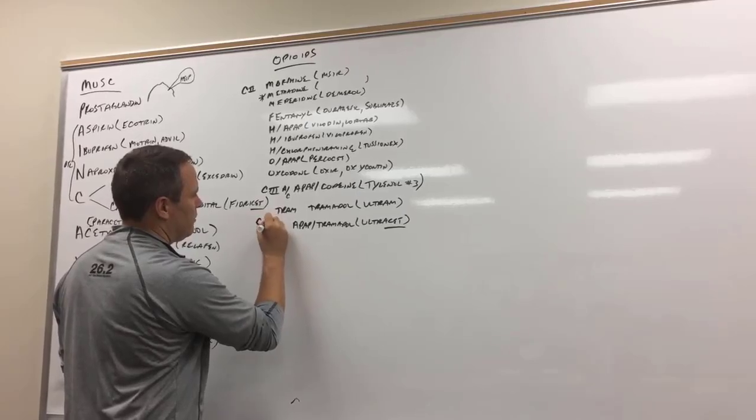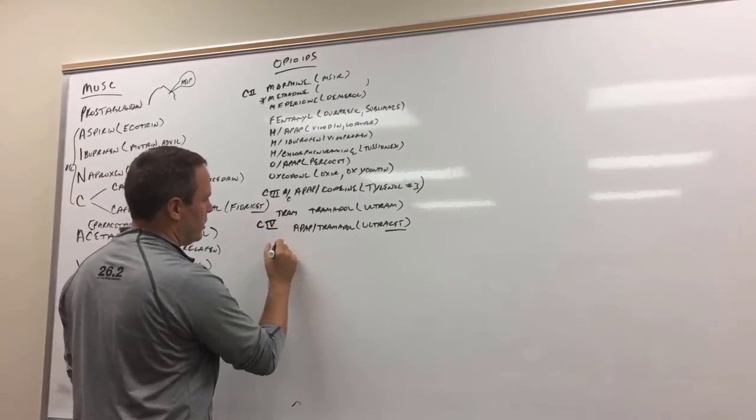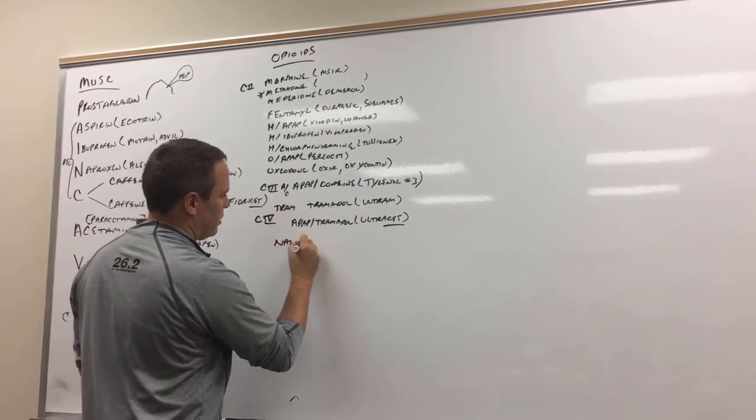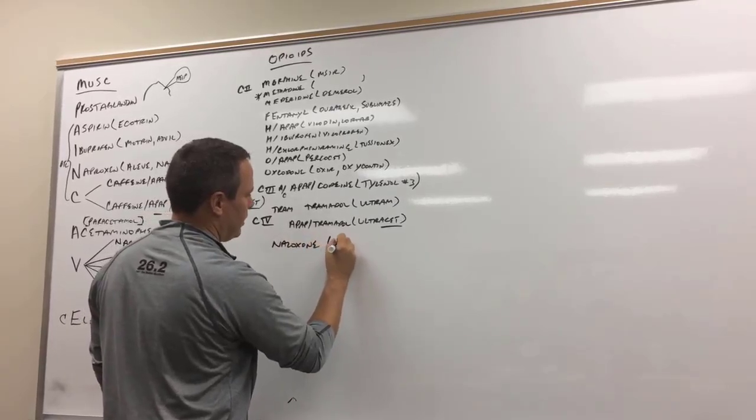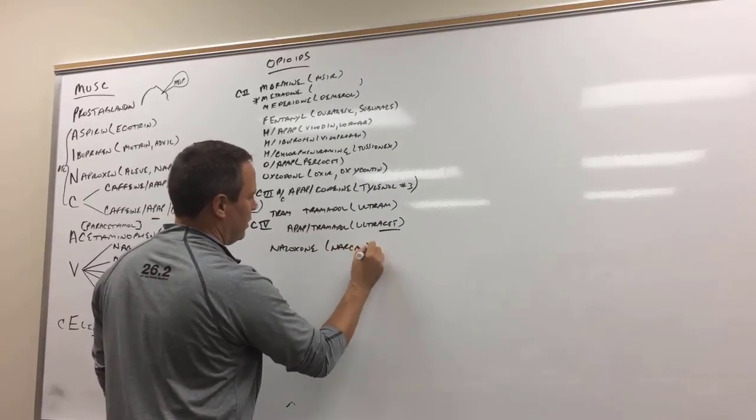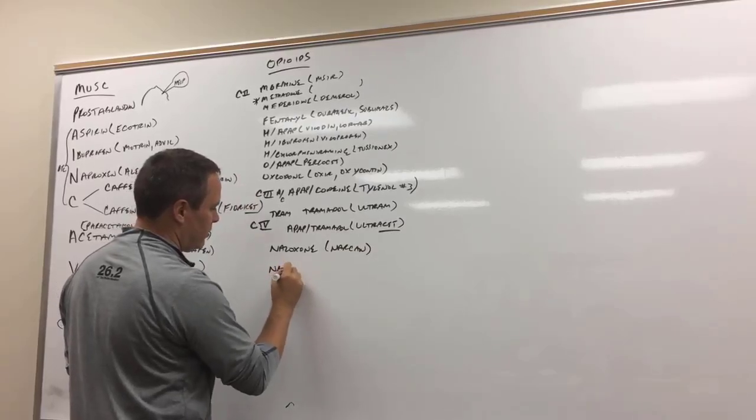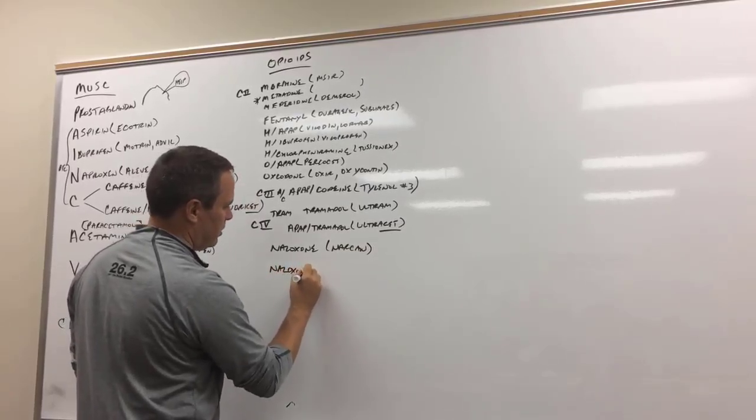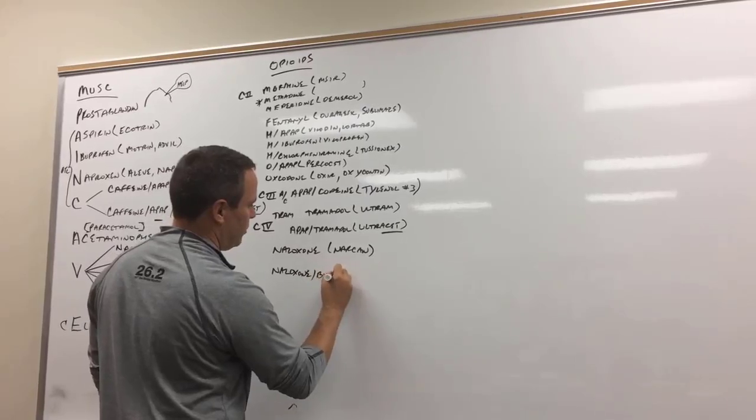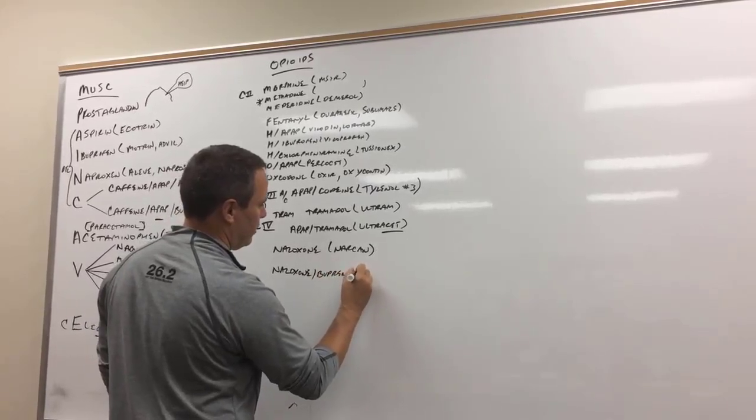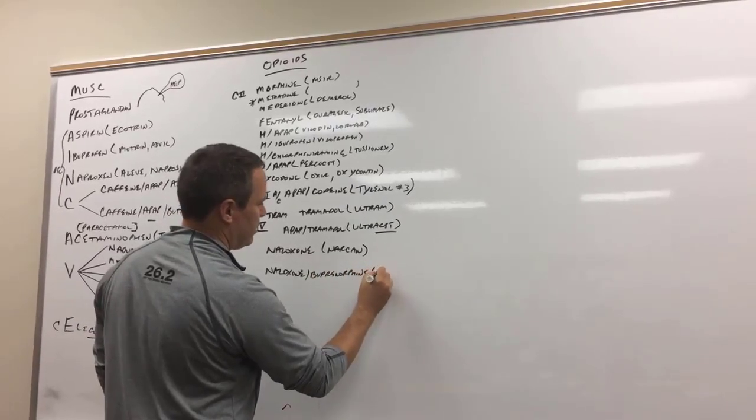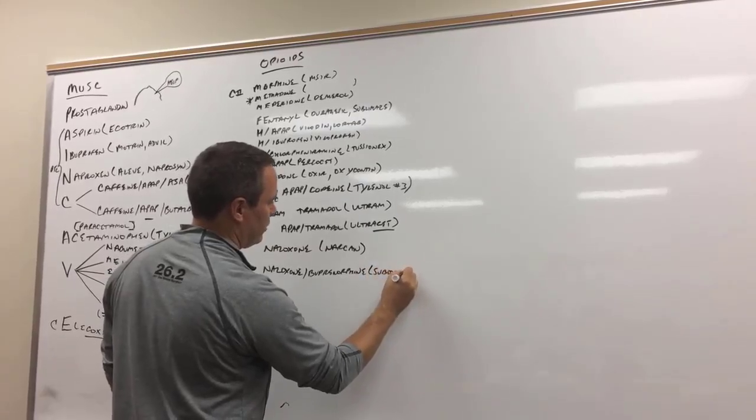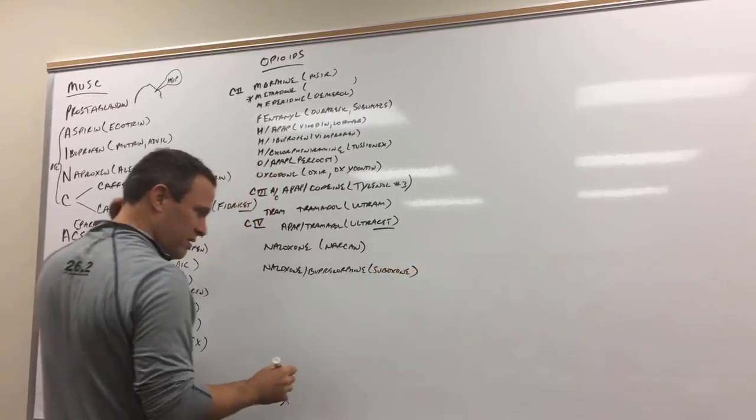Then we've got the antagonist. We're going to have a couple of antagonists. There's naloxone, which is Narcan, and then there's naloxone with buprenorphine, and that's Suboxone, so a little bit different.